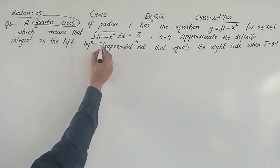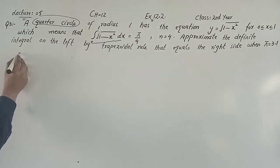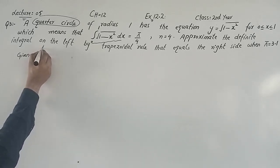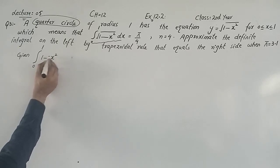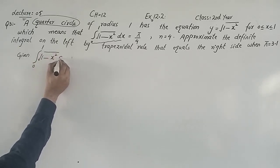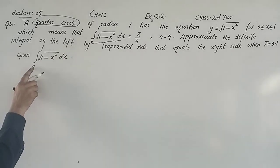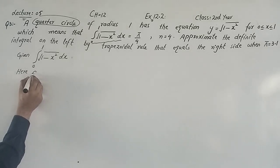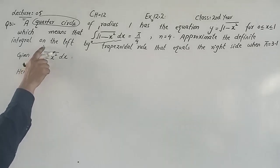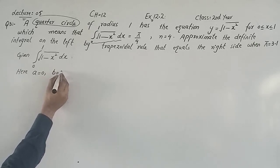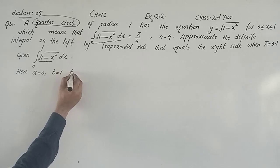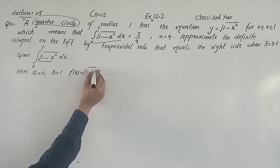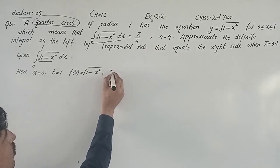Here we are given the definite integral from 0 to 1 of √(1-x²) dx, and n is equal to 4.